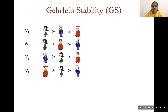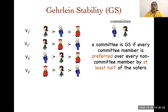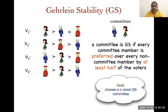The next voting rule we consider is Condorcet stability. Here, again, we have a ranking over the candidates. A committee is Condorcet stable if every committee member is preferred over every non-committee member by at least half of the voters. The goal is to choose a K-sized Condorcet stable committee.